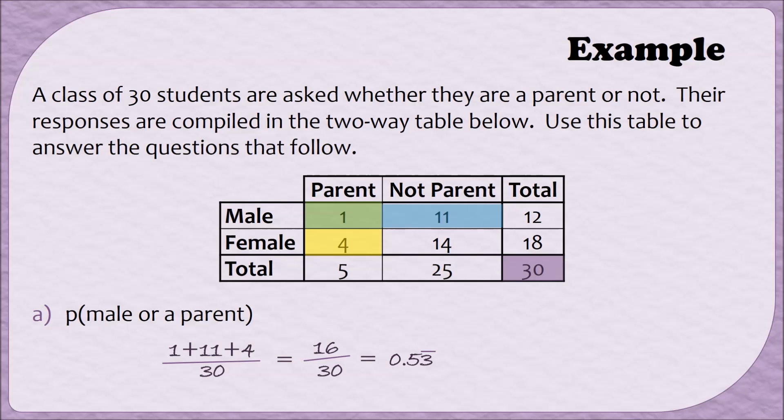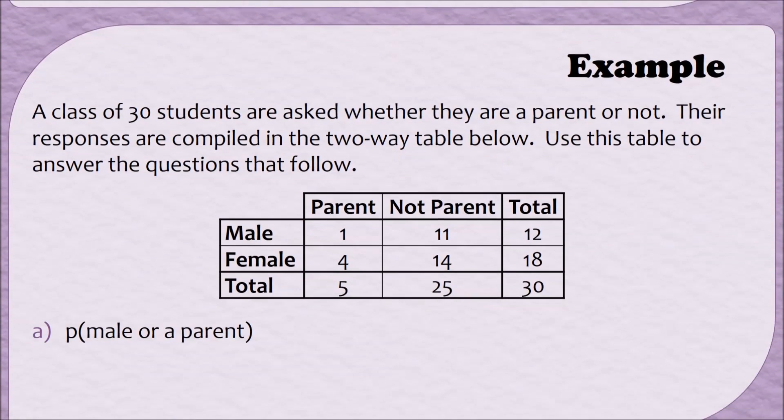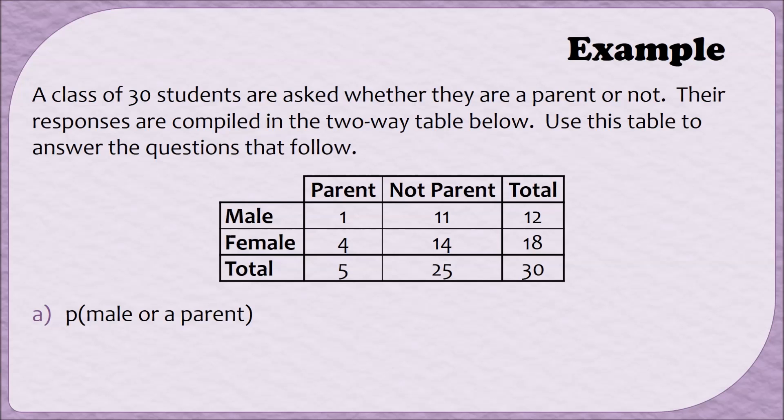Let's look at a second but slightly different way that we could have computed exactly the same result. An alternate way to find this probability would be to take the number of males and the total number of parents and add them together. However there's a small problem with using these totals.